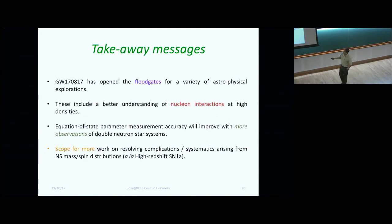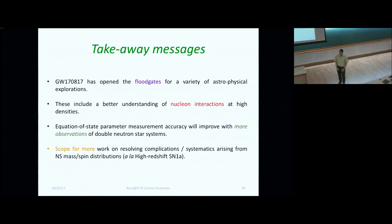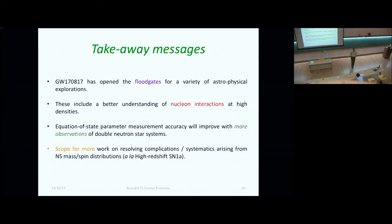So the takeaway messages are that yes, GW170817 has opened the floodgates for a variety of astrophysical explorations. And I touched only one of them, my colleagues in past talks alluded to some others. This includes a better understanding of nuclear interactions at high densities. Equation of state parameter measurement accuracy will improve with more observations of double neutron star systems. And there is scope for more work on resolving complication systematics, very much like what actually happened pretty successfully with high redshift supernovae, which eventually showed that dark energy is for real. And of course, there is also scope for work in combining gravitational wave observations with electromagnetic observations, specifically from x-ray binaries. With that, thank you.